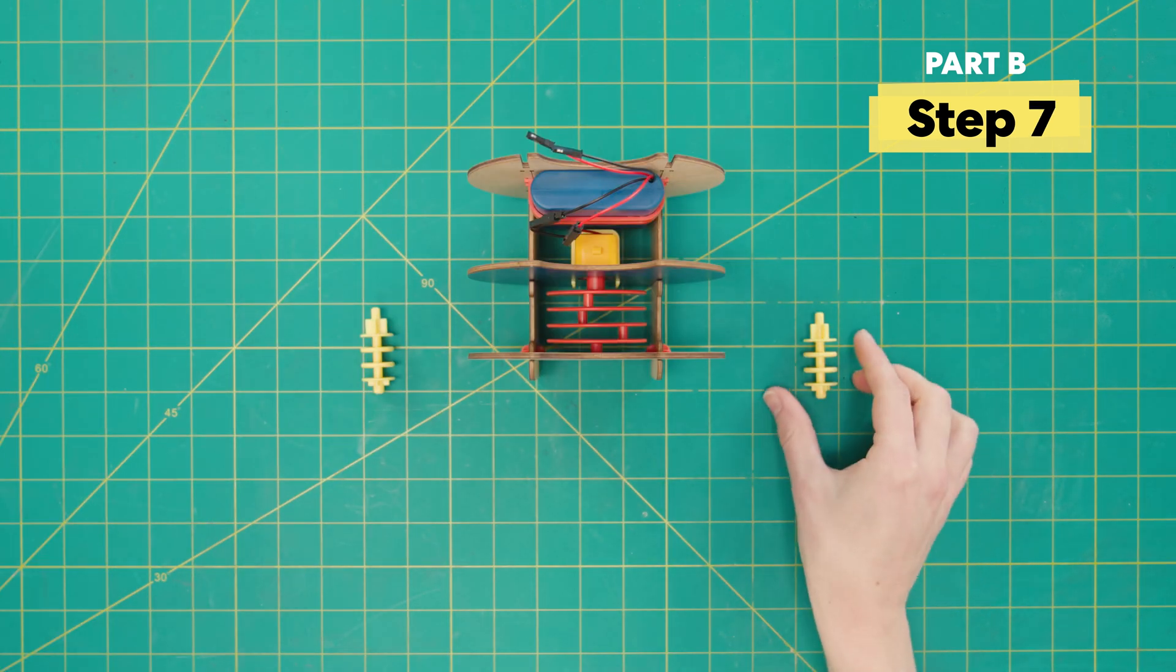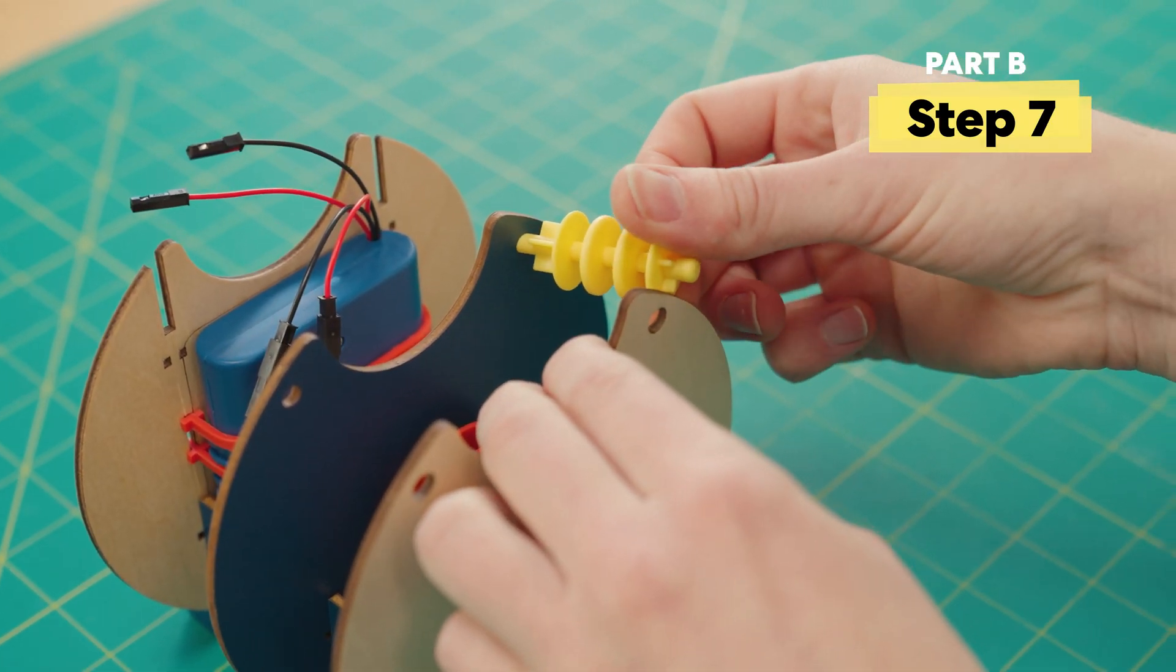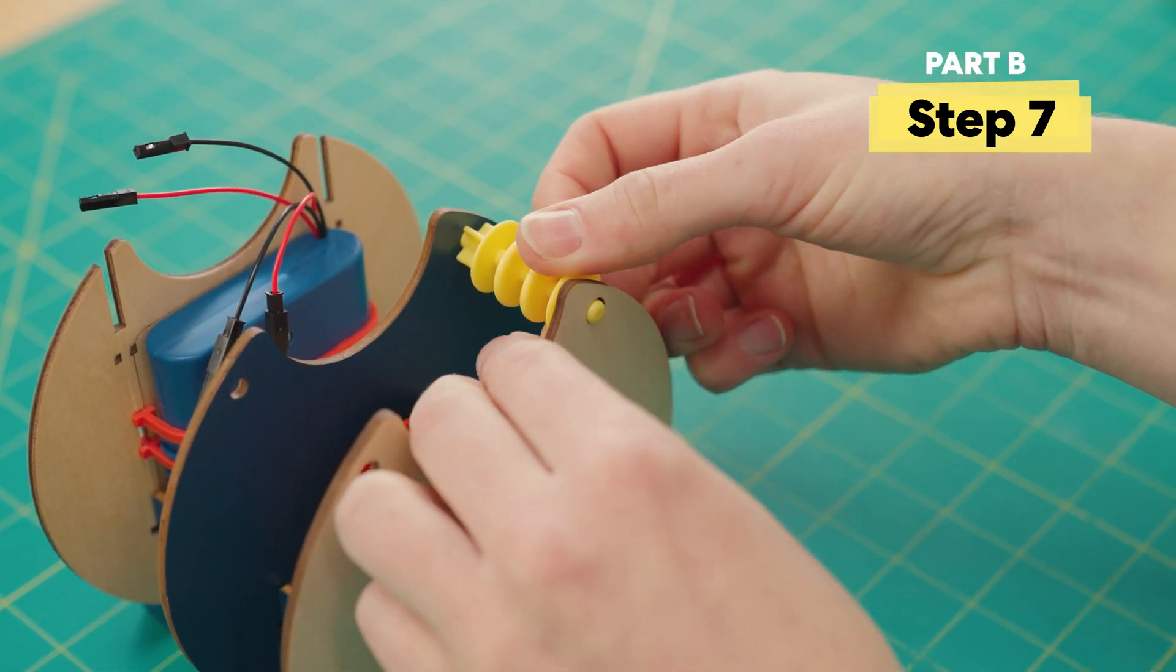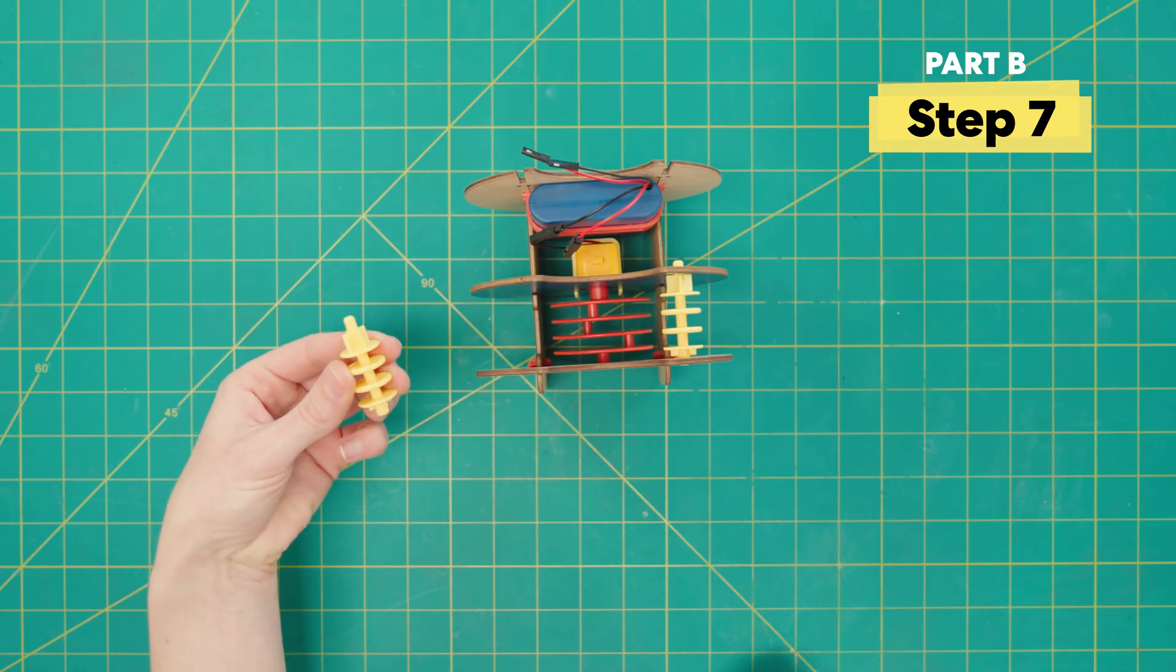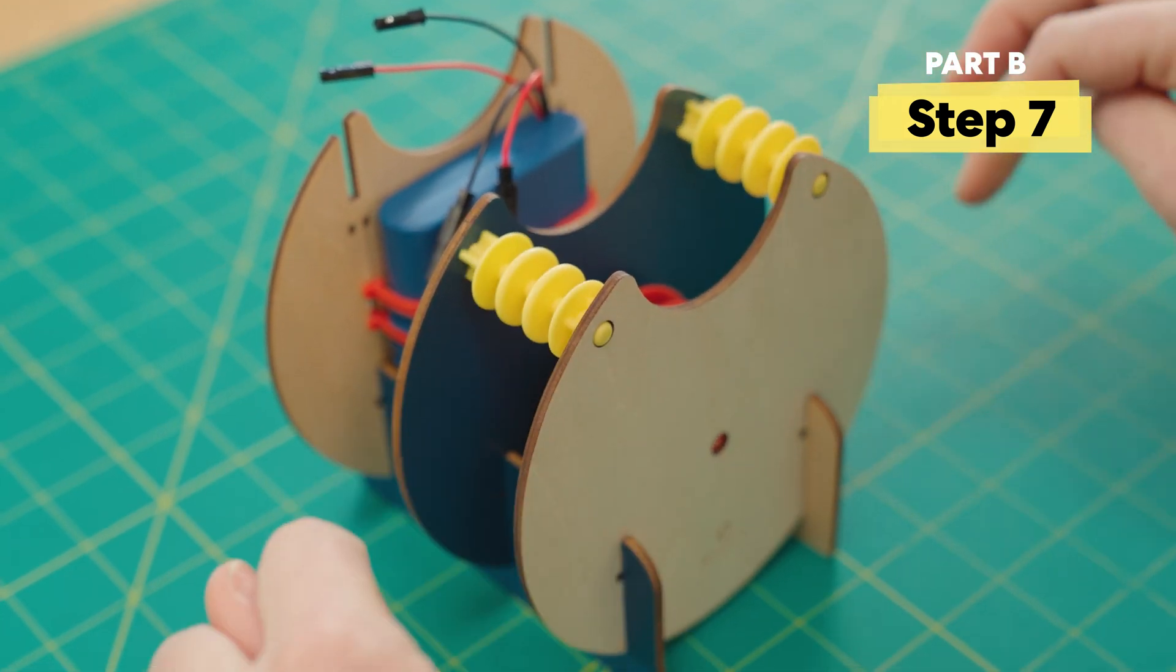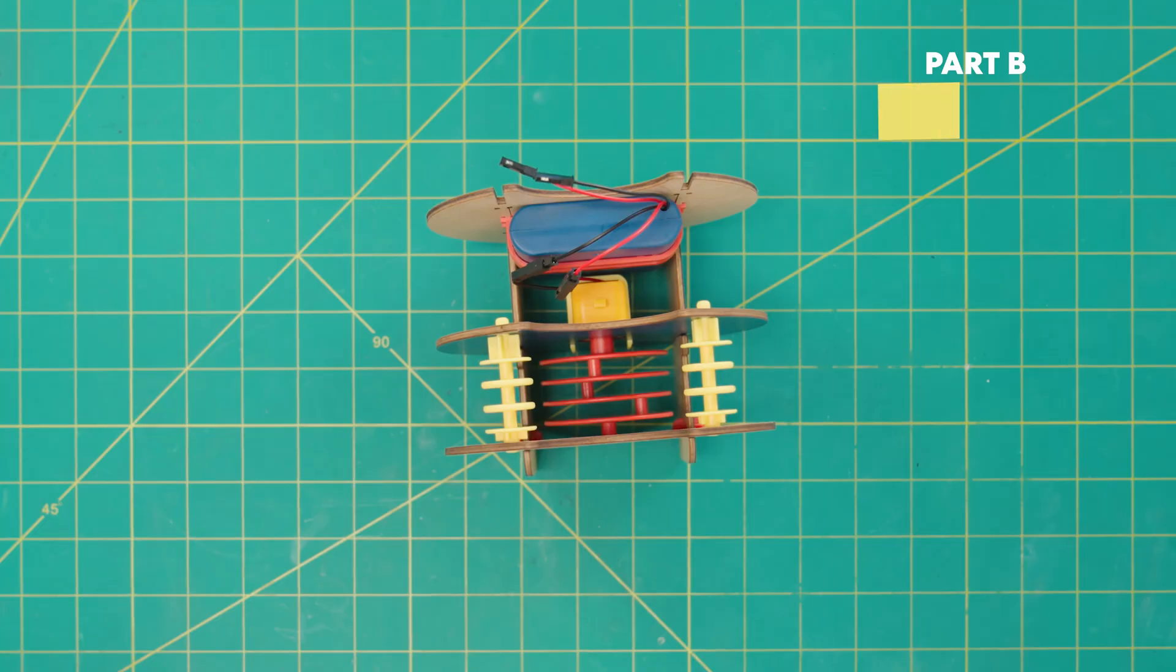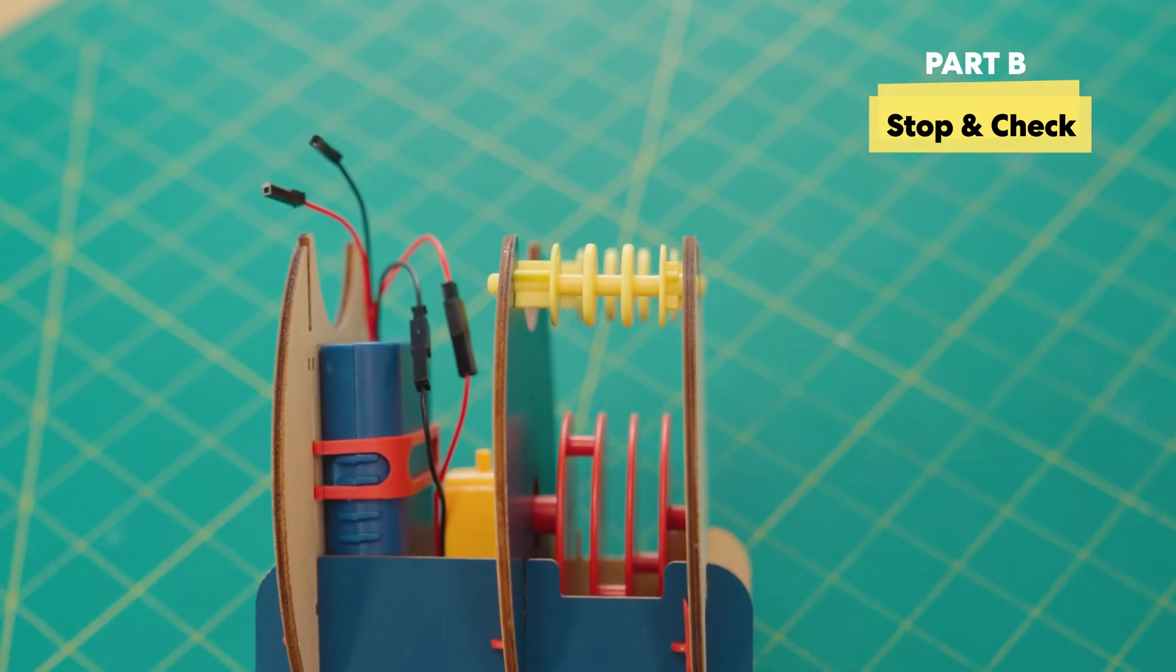Next, grab these spindle pieces. You'll notice there's long ridges on one side. Make sure those long ridges are pointing towards the battery pack. Do the same to the other side. And make sure that both can spin freely. If they can't spin very easily, then double check that your wood frame is pushed all the way together.